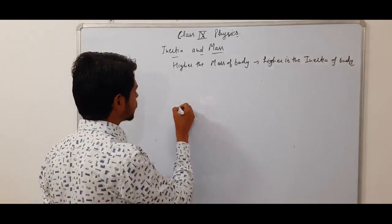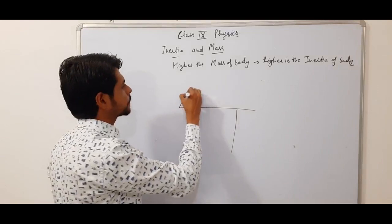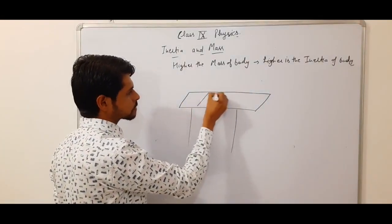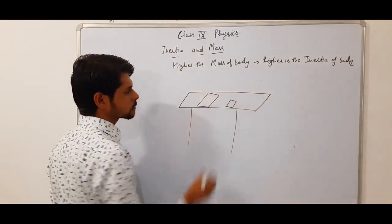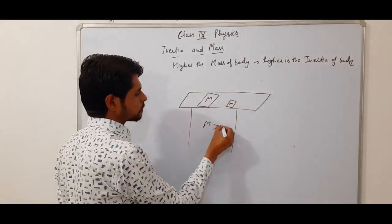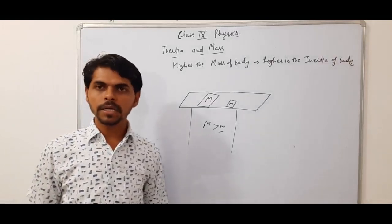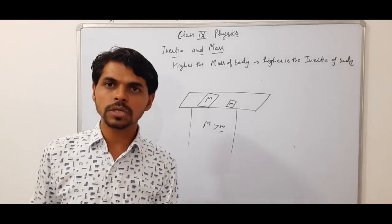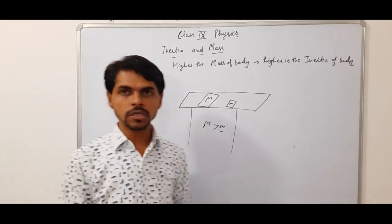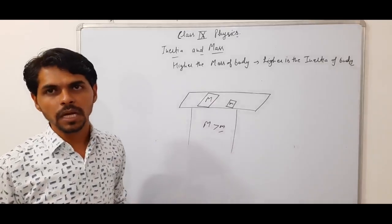Suppose we have a table. Ek table hai hamare paas. Is table ke upar do bricks padi hain — ek badi hai aur ek choti hai. Kiska mass zyada hoga? Badi brick ka mass zyada hoga. Jiska mass zyada, uska inertia zyada hoga. Badi brick ko chalane ke liye zyada force bhi lagana padega.